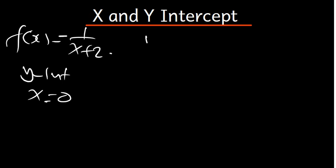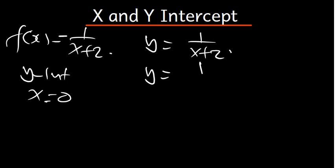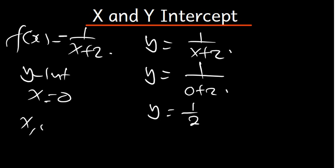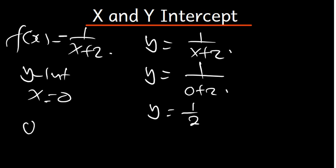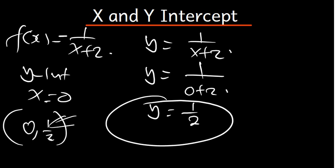In this case, our function is y is equal to 1 over x plus 2. Where there's x, let's put 0. So y would be equal to 1 over 0 plus 2, which gives y is equal to 1 over 2. Our y intercept is given as the coordinate (x, y), so it's going to be (0, 1/2). The y intercept in this case is y equals 1 over 2.